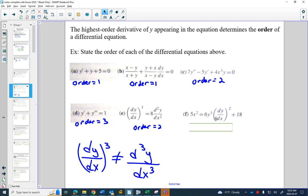So its order is only 2. The last one, we have a dy dx that's squared. It doesn't mean d2y over dx squared. It just means the first derivative squared. So this one only has an order of 1.